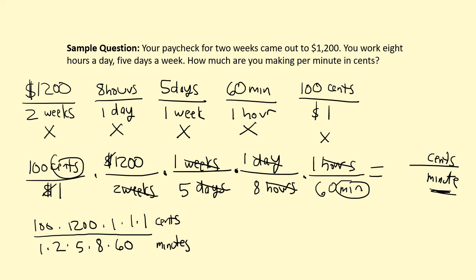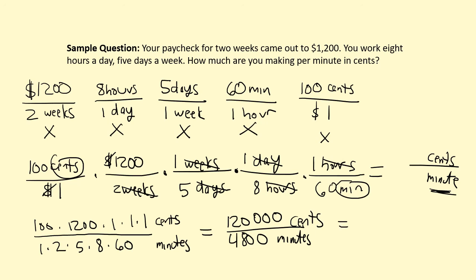Multiplying all the numbers across the top gives us 120,000 cents. Multiplying all the numbers across the bottom gives us 4,800 minutes. To simplify this into a unit rate, we divide: 120,000 divided by 4,800 equals 25 cents per one minute. So in this scenario, if you make $1,200 every two weeks, you're making 25 cents per minute.